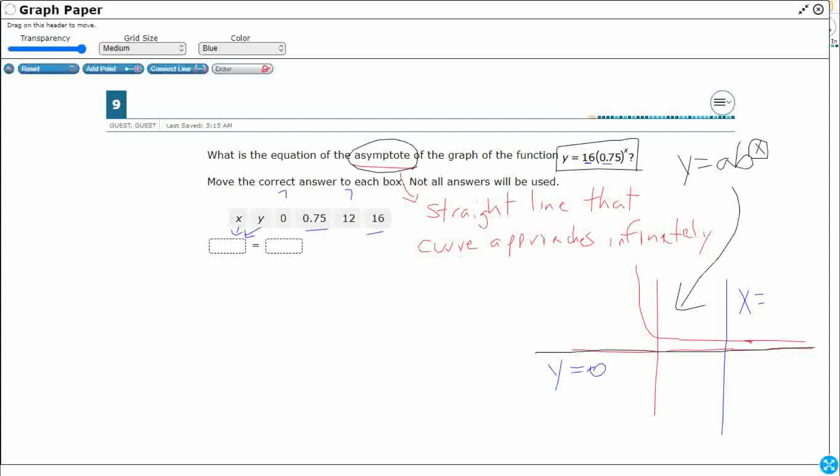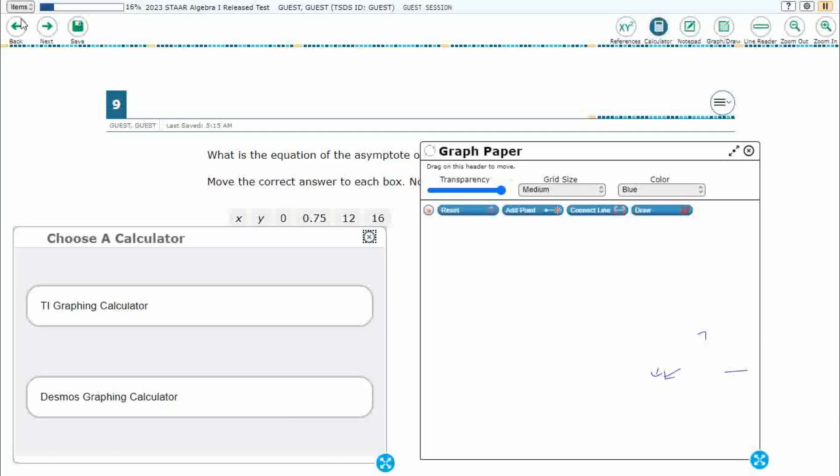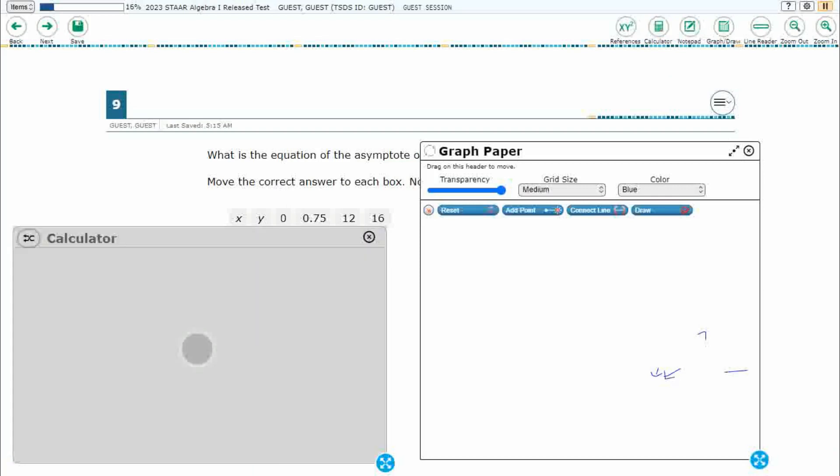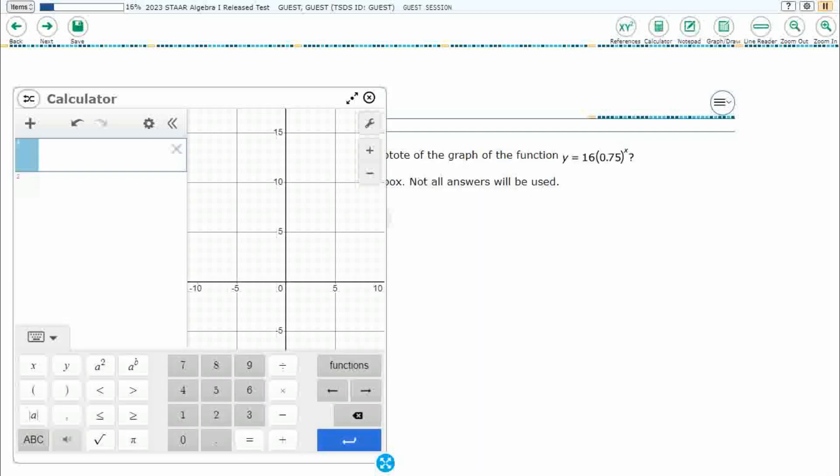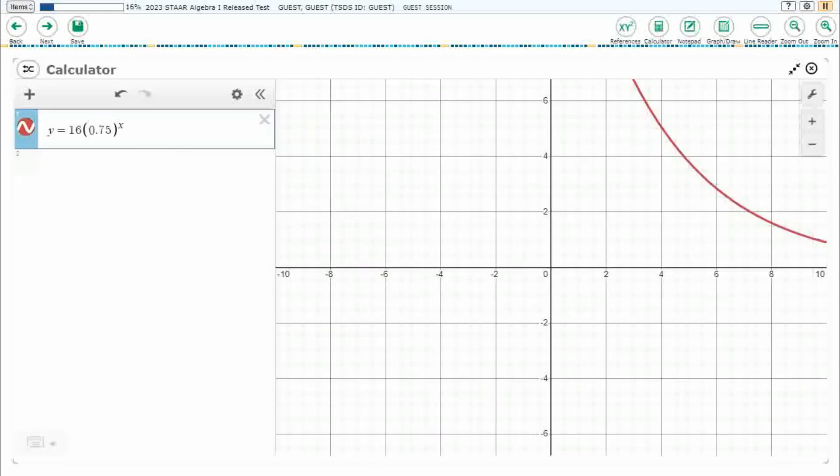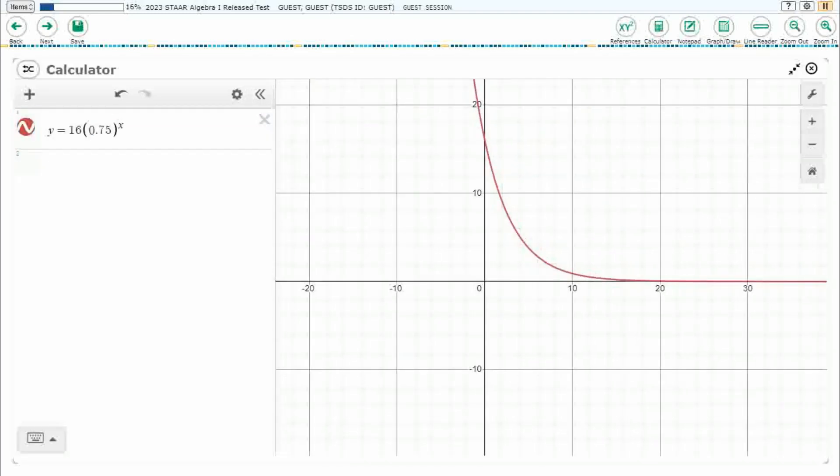So let's just use a calculator. Let's just graph it and visually see what it looks like. So I'll use that Desmos graphing calculator. And let's just enter in this function. So I'm going to say y equals and let's grab that 16 and then we've got the 0.75. We're going to need to get that exponent function right there. Okay. So that looks pretty good. Let's play with this.